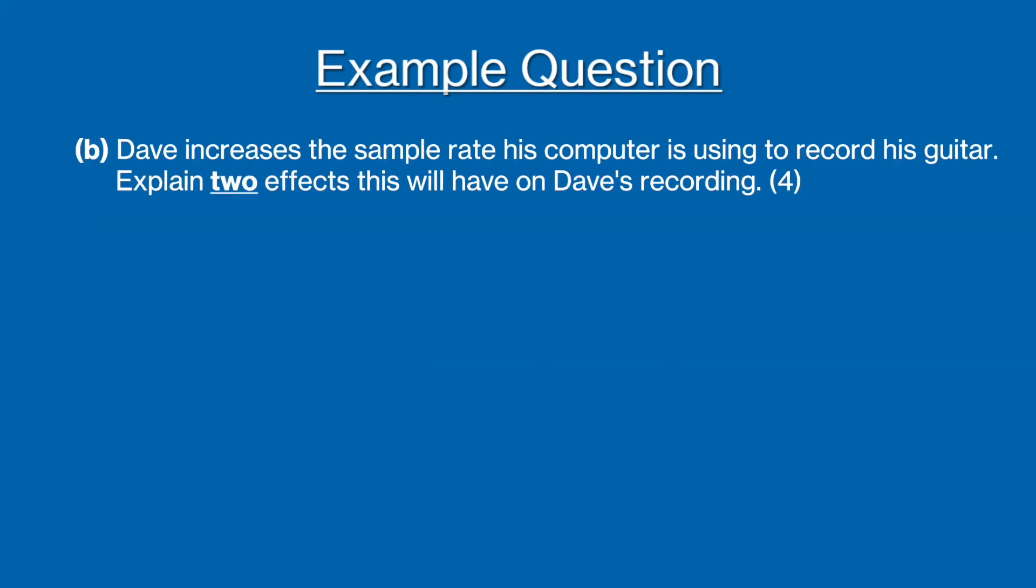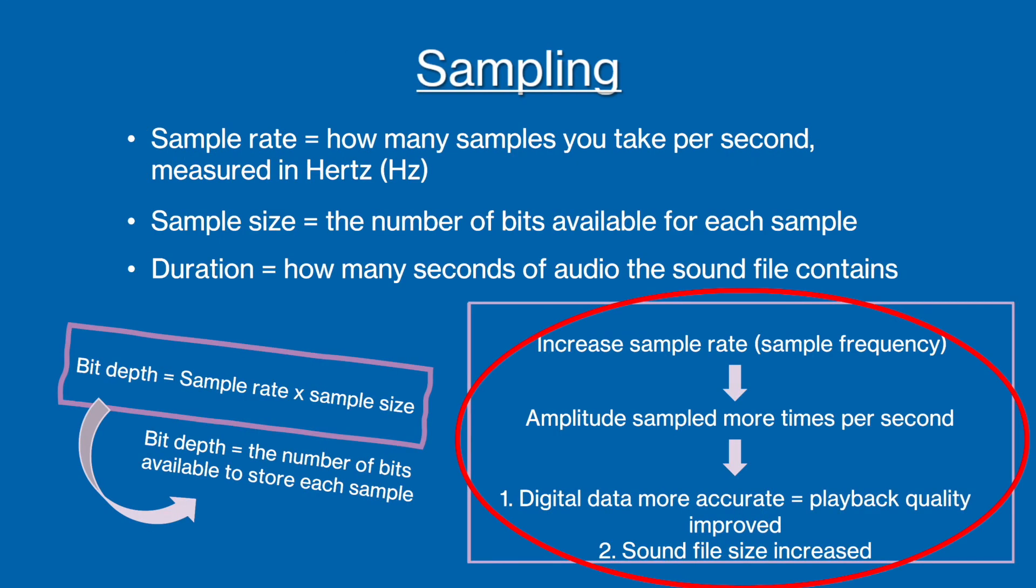Part B then asks to explain two effects that increasing the sample rate will have on Dave's recording. This question is four marks and you're asked to explain two effects, therefore you're going to get a mark for each of the two reasons you state, and a mark each for explaining how and why that effect happens. So first let's think about what increasing the sample rate actually means. Well, if we increase the sample rate, then essentially what we are doing is taking more samples and measuring the amplitude of the wave more times per second.